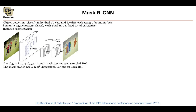You're going to have a mask branch, and it's going to output a K by M-squared dimensional output. K is the number of classes — person, cat, dog, background, etc. You're going to output a mask of M by M resolution, giving you K times M times M outputs. The task uses a per-pixel sigmoid, so in that box, per each pixel, you have M-squared values.